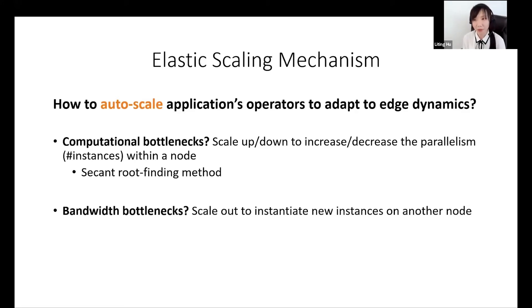If it is a bandwidth bottleneck, we scale out to initiate new instances on another node to increase the network path diversity.